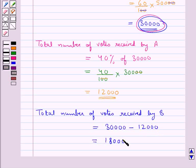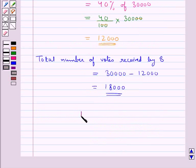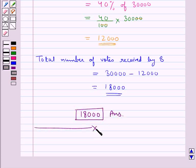So total number of votes received by B is 18,000. So 18,000 is our final answer. This completes the session.